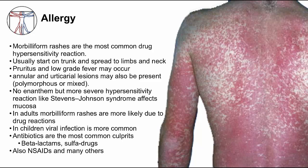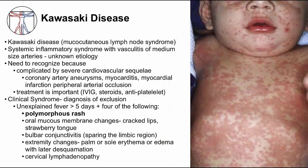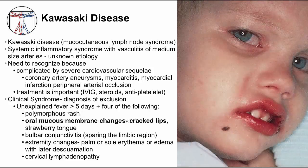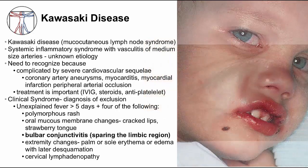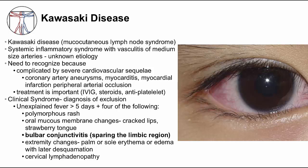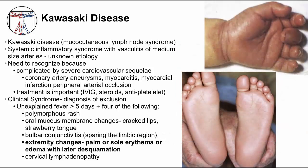Another non-infectious etiology that can mimic measles is Kawasaki's disease — a systemic inflammatory syndrome with vasculitis of medium-sized arteries of unknown cause. If unrecognized and unmanaged, it may be complicated by coronary artery aneurysms and other severe cardiovascular sequelae. The diagnosis is made by excluding other diseases and must include several findings that overlap with classic childhood exanthems: a polymorphous rash over the trunk and groin; oral mucosa changes like red, swollen, cracked lips and a strawberry tongue; conjunctivitis that is classically limbic-sparing; edema and redness of the hands and feet; and swollen lymph nodes in the neck.